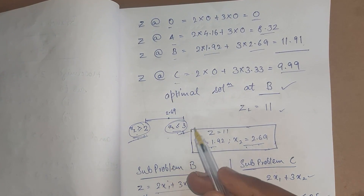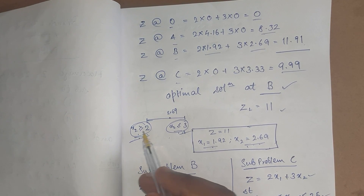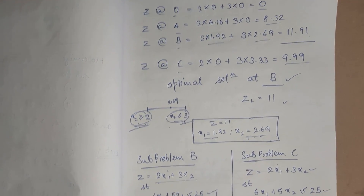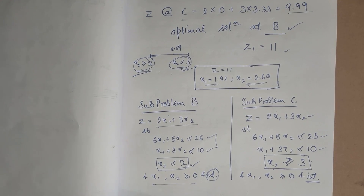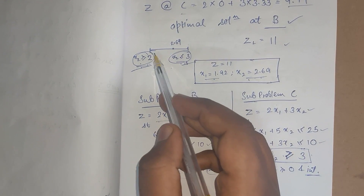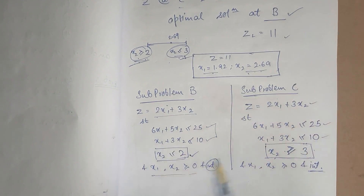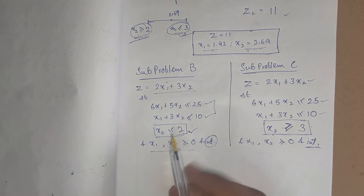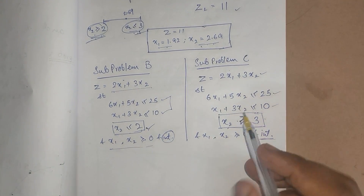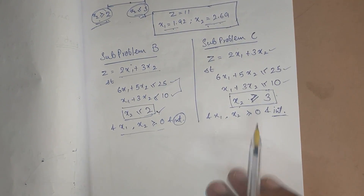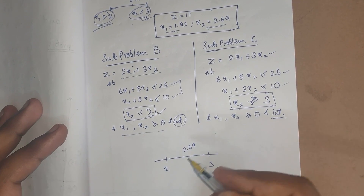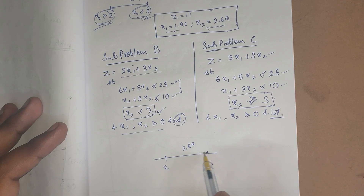On a number line, 2.69 lies between 2 and 3. So x2 must be either greater than or equal to 2, or less than or equal to 3. This gives us two subproblems: subproblem B adds the constraint x2 ≤ 2, and subproblem C adds the constraint x2 ≥ 3.